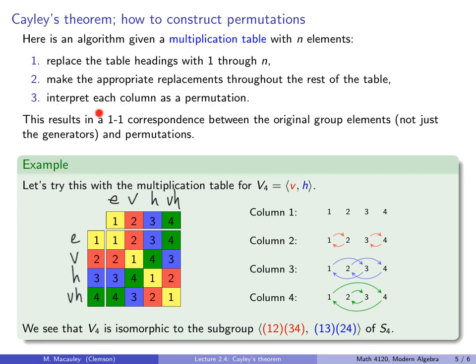And now, interpret each column as a permutation. So, what do I mean by that? This first column is the permutation that sends 1-to-1, 2-to-2, 3-to-3, 4-to-4. That's the identity permutation. Column 2 is a permutation where 1 goes to 2, 2 goes to 1, 3 goes to 4, 4 goes to 3. See how this is going?